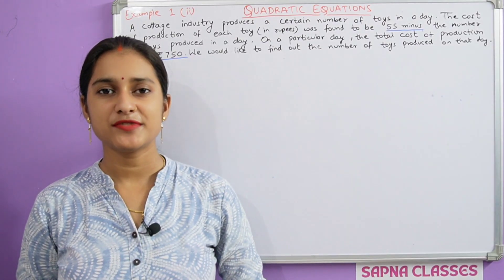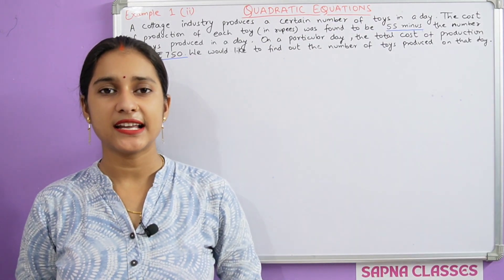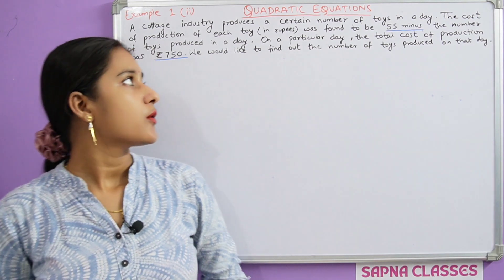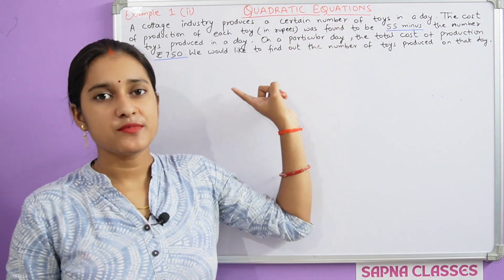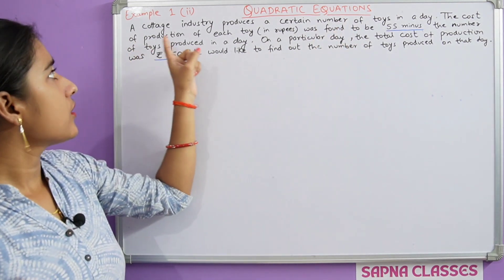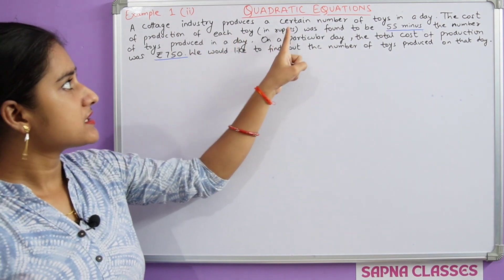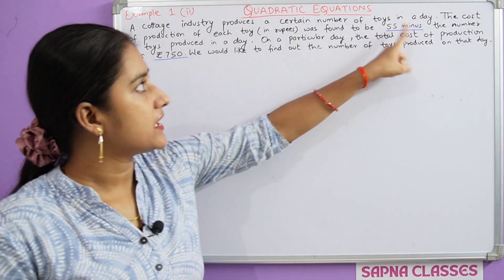Welcome to my YouTube channel Sapna Classes NCIT Class 10th Math Chapter Quadratic Equation. What is the question? A cottage industry produces a certain number of toys in a day.